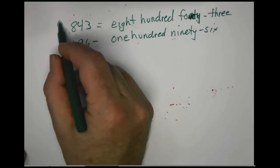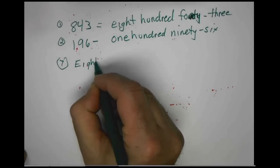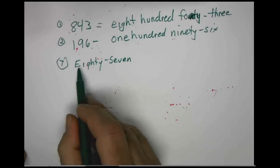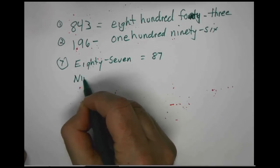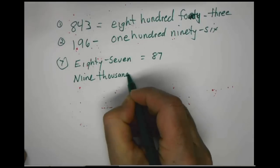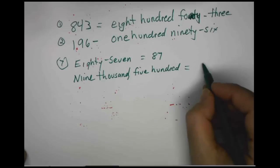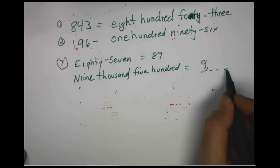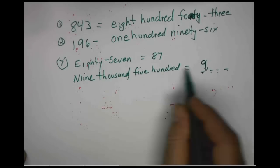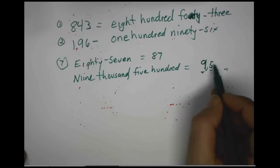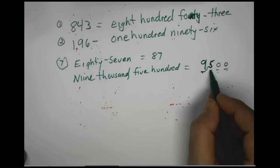When we drop down to problem number 7, they reverse that — they're giving you the name and asking you to write the number. So for 'eighty-seven,' we would write 87. Number 9 is 'nine thousand five hundred,' so we would write 9,500 — the 9 goes into the thousand spot, five goes into the hundred spot, and there are no tens or ones. We just fill out those spots for the various place values.